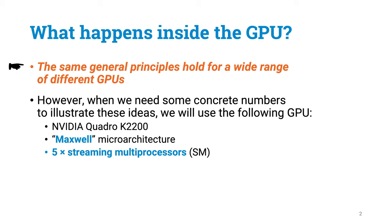The general principles are what is important, and the specific technical details of some specific GPU not so much. But I will need some concrete examples as an illustration. Whenever I mention specific numbers, it refers to the GPU that we have in our classroom — an NVIDIA GPU with the so-called Maxwell microarchitecture, with five streaming multiprocessors, or SMs for short. The specific numbers in different GPU models differ, but the numbers we use should give you a good idea of the orders of magnitude.